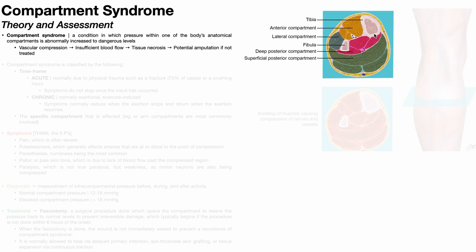Here we see a cross-section of the lower leg somewhere between the knee and the ankle. Here's the tibia, here's the smaller fibula, and we have the various anatomical compartments. In yellow we have the anterior compartment, in blue we have the small lateral compartment, and in pink and green we have the posterior compartment — with a deep portion in pink and a superficial portion in green.